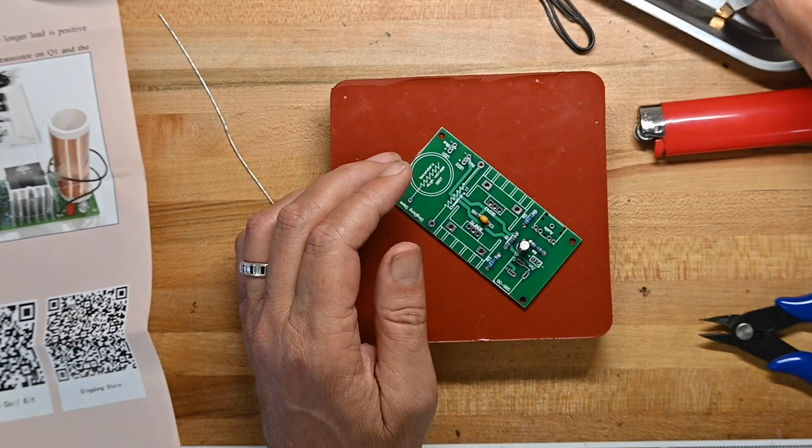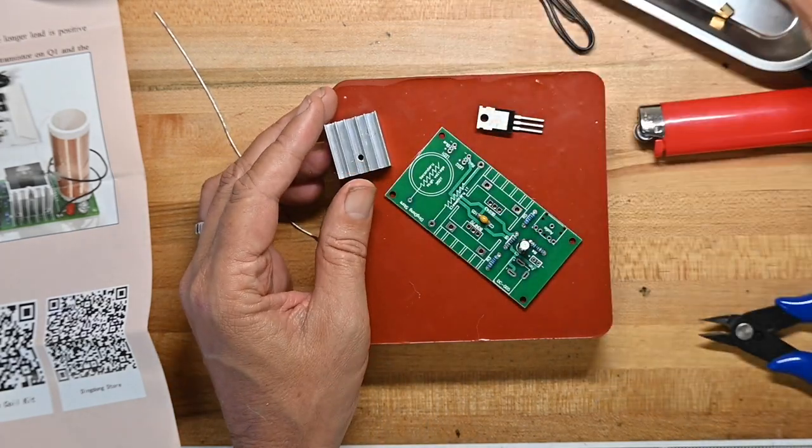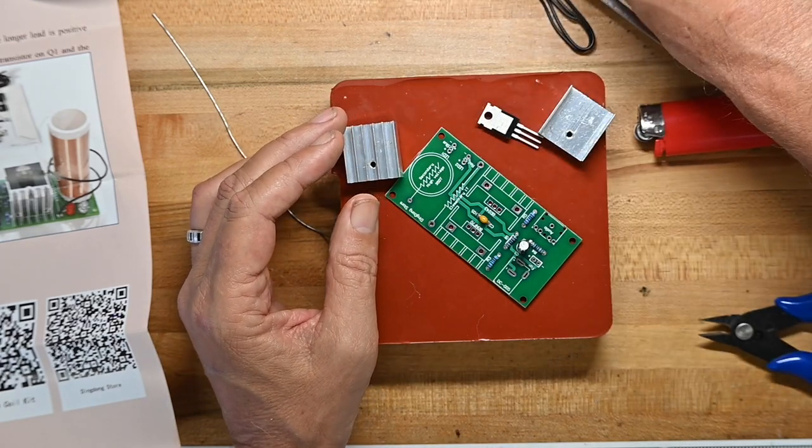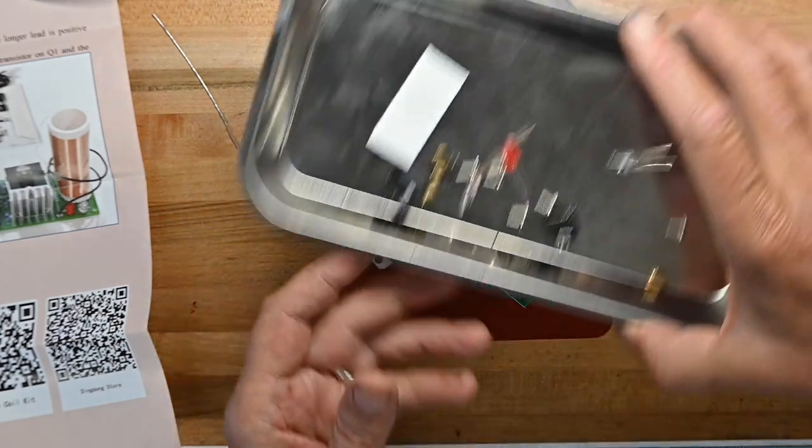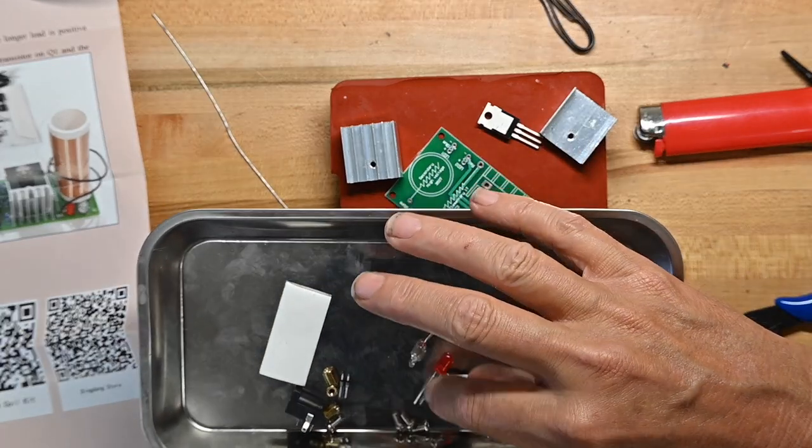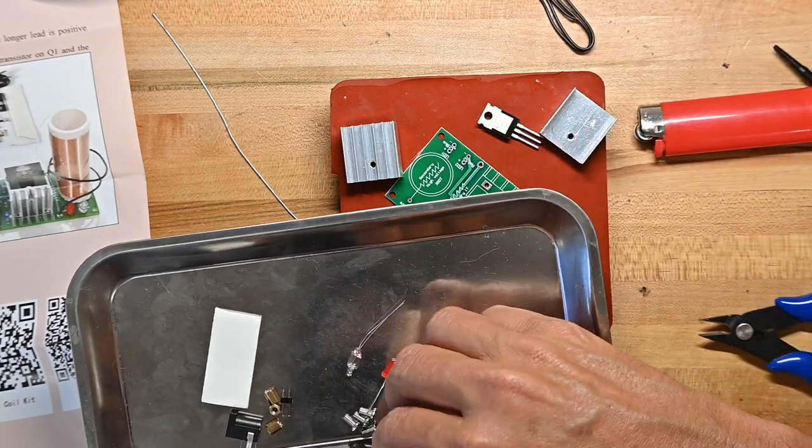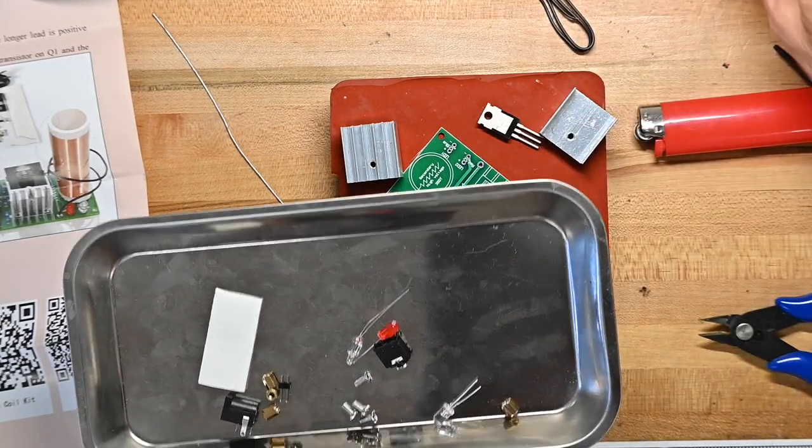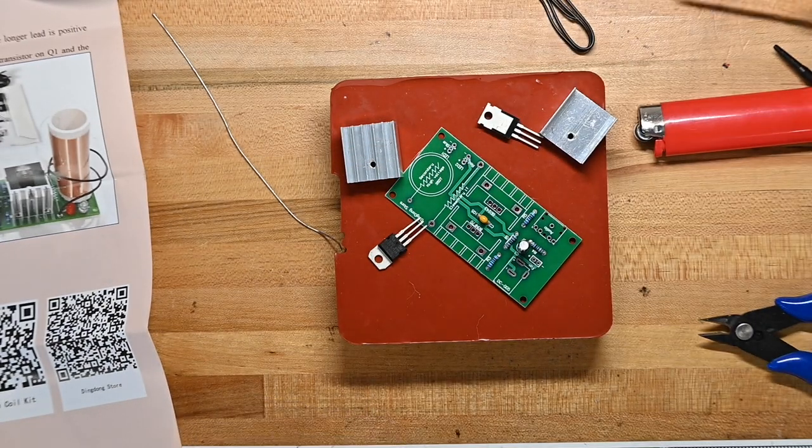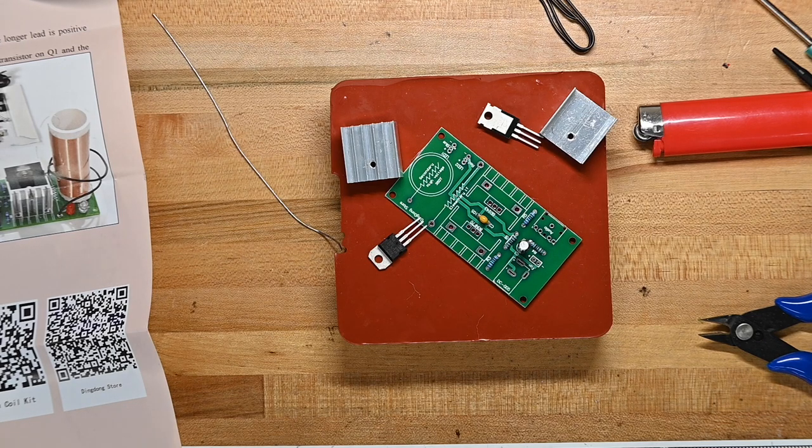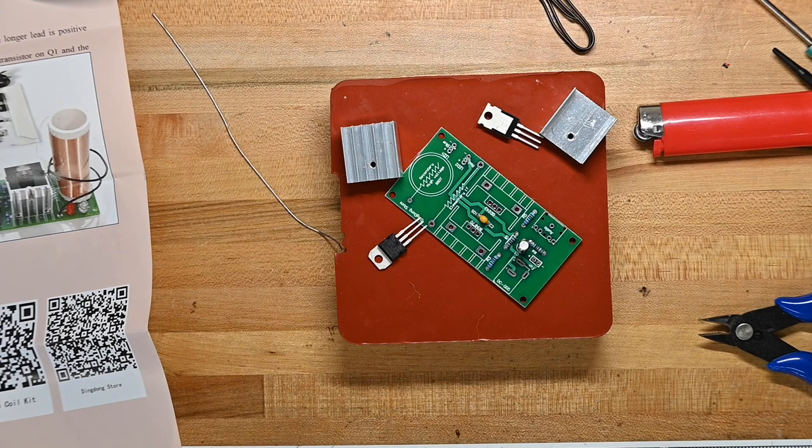One microfarad at C1. Now we're going to do the two transistors. And make sure I've got the correct screws for these. Well, all the screws are the same size, so it doesn't matter. Before I do this, I'm going to grab some heat sink, I mean heat transfer paste, thermal paste on here.